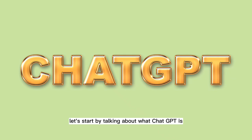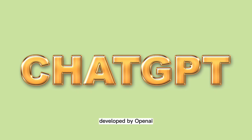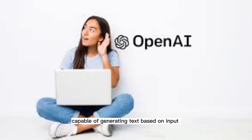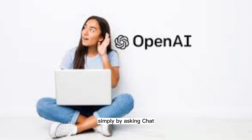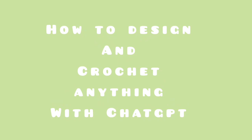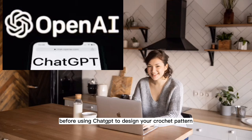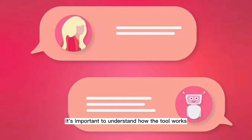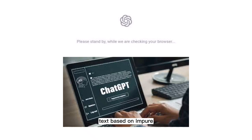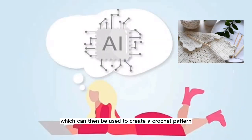Let's start by talking about what ChatGPT is. ChatGPT is an advanced language model developed by OpenAI, capable of generating text based on input. With this tool you can easily design anything you want to crochet simply by asking ChatGPT to generate the pattern for you. ChatGPT uses advanced machine learning algorithms to create text based on input, which can then be used to create a crochet pattern.